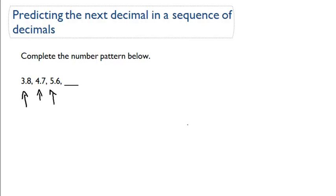So we got to figure out what the pattern is. What's the difference between 3.8 and 4.7? Let's figure that out. 4.7 minus 3.8. So 7 minus 8, can't do that. I'm going to borrow one from here. I'll make that 3. So 17 minus 8 is 9 and then 3 minus 3 is 0. So 0.9 is the difference.